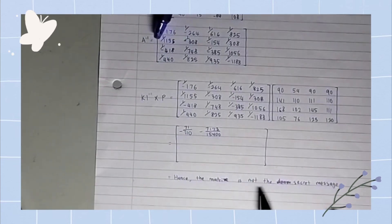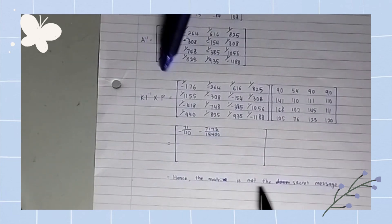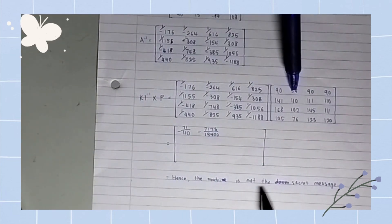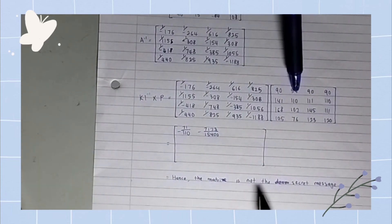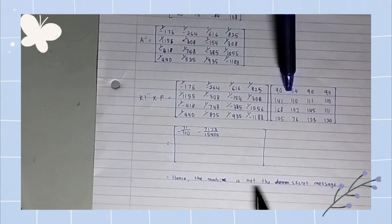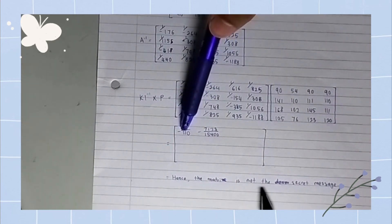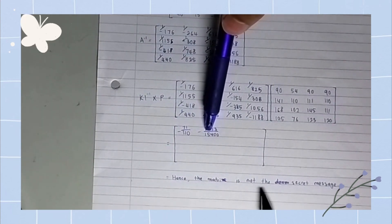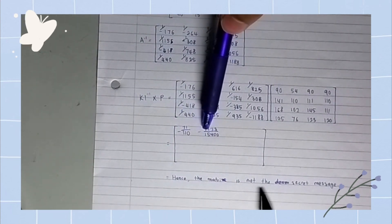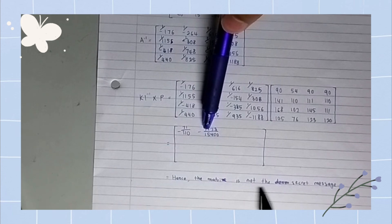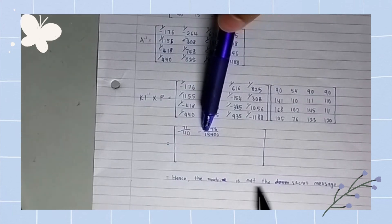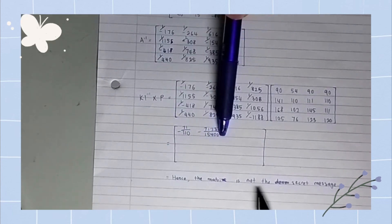After we have the inverse matrix, we multiply it with the P matrix that was given to us to decode the code. However, the first two numbers that we multiply don't give the exact numbers that sync with the given numbers to decode the message.